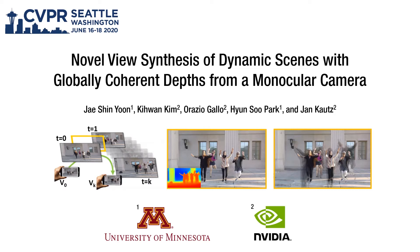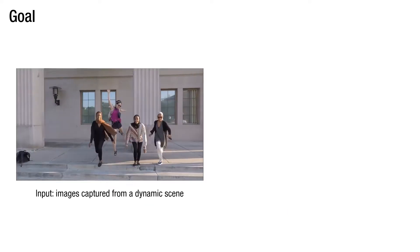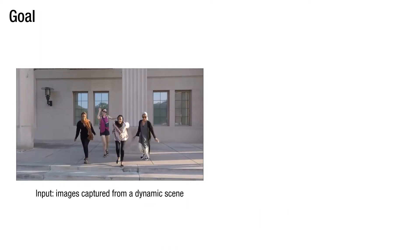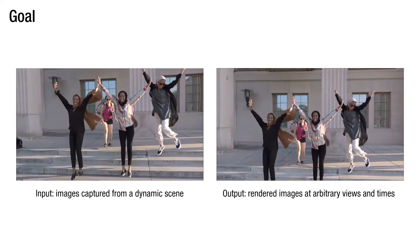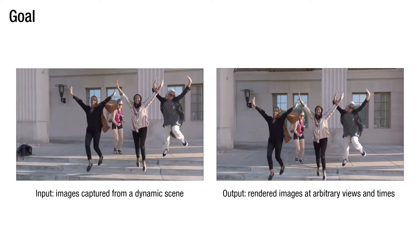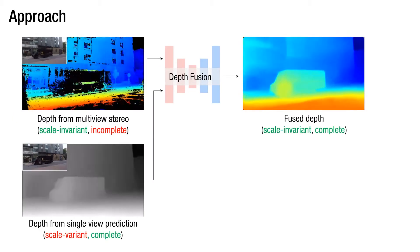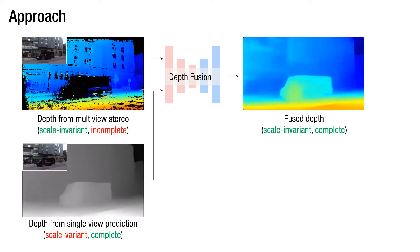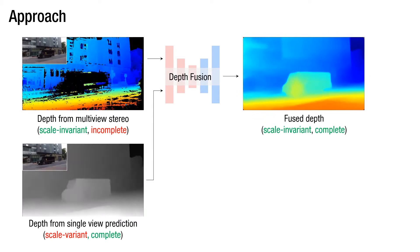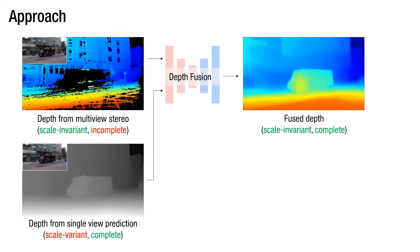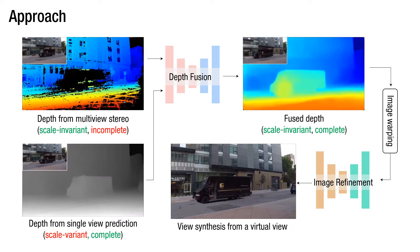We present a new method to synthesize a novel view from dynamic scenes using a monocular camera. Given images captured from a dynamic scene, our goal is to synthesize the images at arbitrary views and times. Our key idea is to combine the strength of stereo-based depth and learning-based depth to estimate a scale-invariant and complete depth map. Using this depth map, we render a photorealistic virtual view by warping and refining the images.